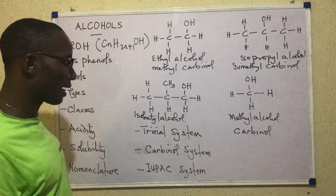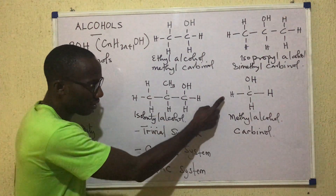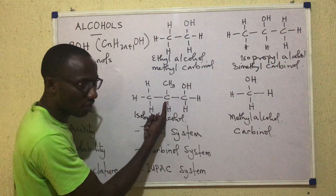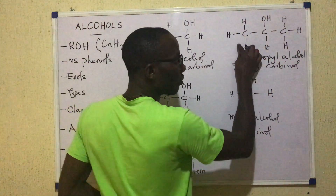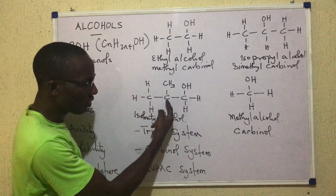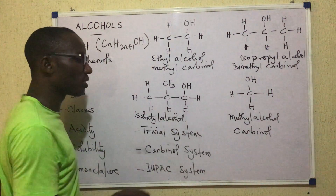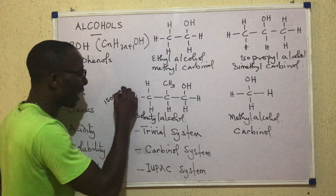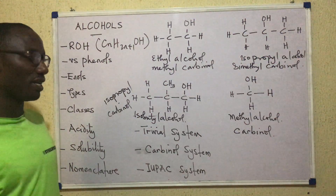How do we name this last one by the carbinol system? If you look at it, there's carbinol here — this hydrogen has been replaced by three carbons that are not in a straight chain but are branched. Just as before, we call the group isopropyl because the OH is on carbon-2. So the three carbons are named isopropyl, and this compound is called isopropyl carbinol. That covers all four by the carbinol system.